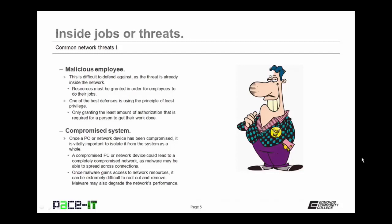Compromised systems are another threat. Once a PC or network device has been compromised, it is vitally important to isolate it from the system as a whole. A compromised PC could lead to a completely compromised network, as malware may be able to spread across its connections. Once malware has gained access to network resources, it can be extremely difficult to root out and remove. Malware may also degrade the network's performance, causing other issues.